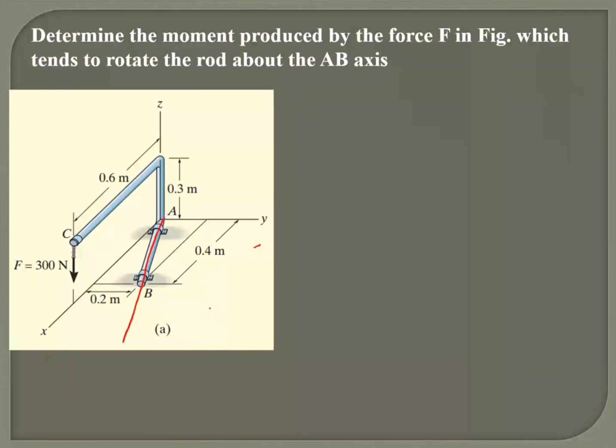So the very first thing I need to do is to find the moment created by this force on any point on this line. So I can do a position vector AC. I can also do BC. I can also do AX. I can also do BX. Four different position vectors I can use. Am I right?